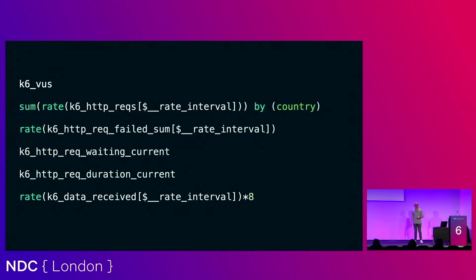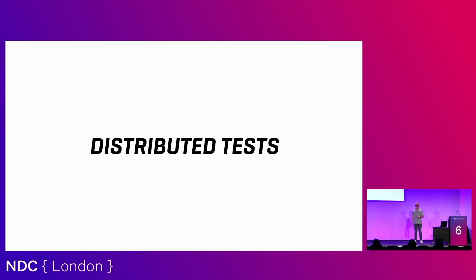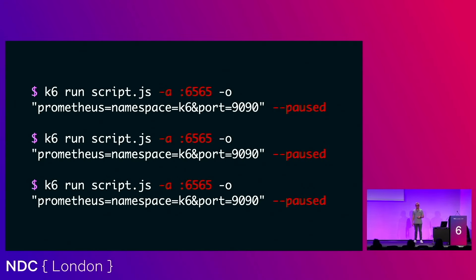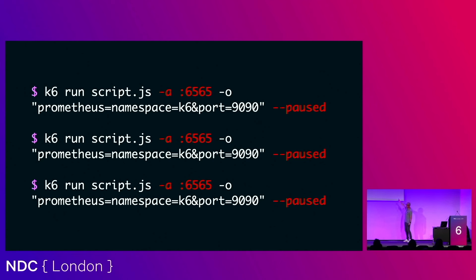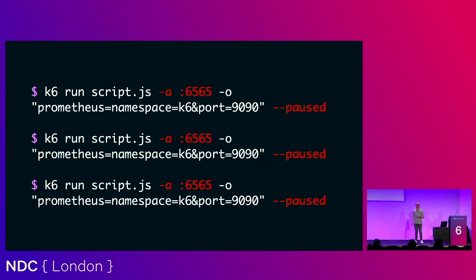So now that we've laid out the groundwork, let's talk about the distributed tests. Here's what I'd advise: start K6 with `--paused` on port 6565 so the API is available but tests don't run immediately. You want to stage everything — put all nodes in place — and then trigger them from one central location. If you want to control scalability you need to define a scenario set to `externally-controlled`, which allows you to fiddle with scalability parameters at runtime without changing the command line. Set the virtual users to start at 2 with a max of 5,000, and a max duration of two hours.